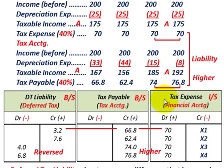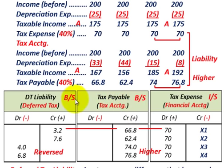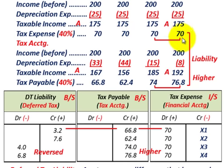Now let's look at how we record these using T-accounts. Because this is defined as a deferred tax liability, debits and credits work the same as a liability account. Tax expense comes off our financial or book accounting — $70,000 for each of the four years. Debit tax expense for years X1 through X4 at $70,000.